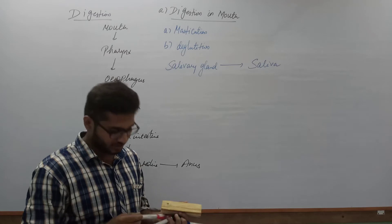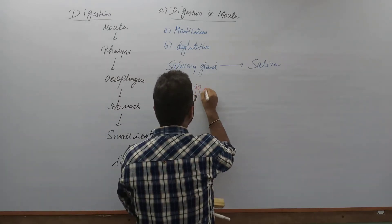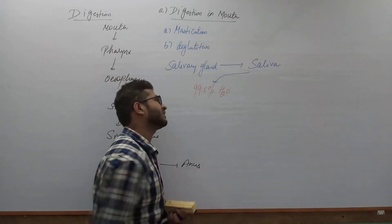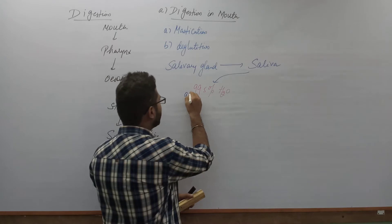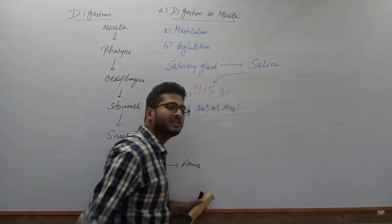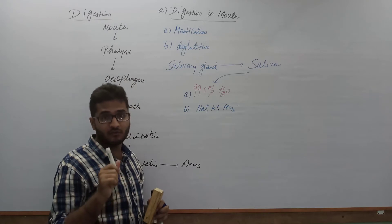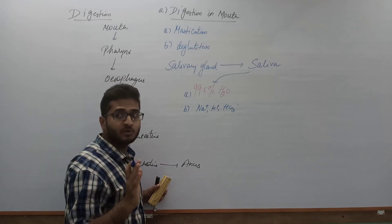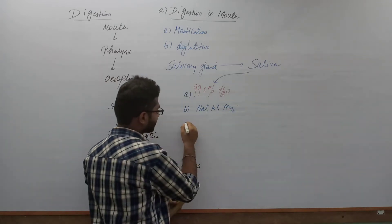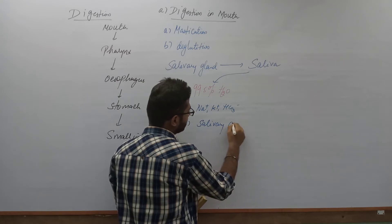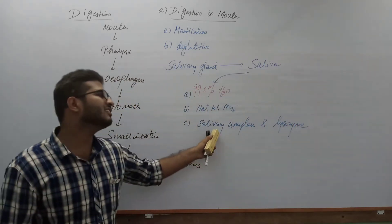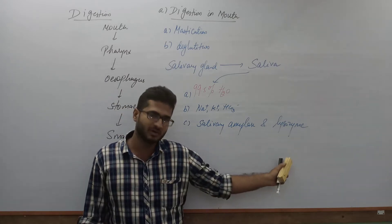The salivary glands secrete saliva. The major composition of saliva is 99.5 percent water. The remaining portion comprises ions like Na+, K+, bicarbonate ions, etc. The two most important enzymes present in saliva are salivary amylase and lysozyme.